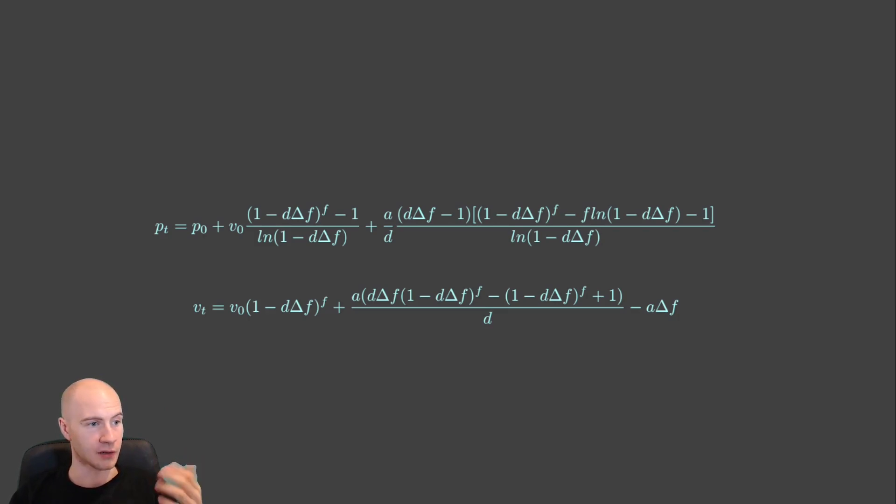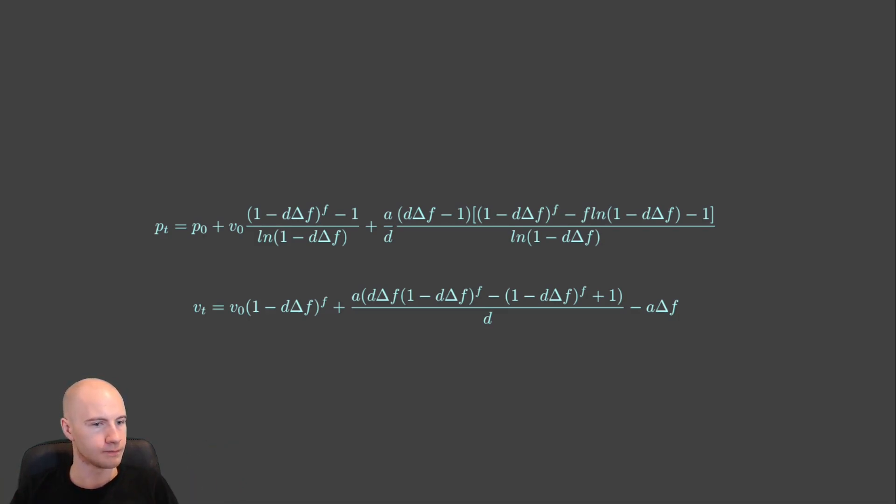And now we just take this formula, write it into code into some method and we've gotten rid of the while loop. That is all. This is the code. It really is just the same as the formula but in C sharp. The only difference is that I multiply by delta time again. And the reason is that the function is defined in frame time. So this means like a time of one is one frame and not one second. And so I multiply again so I get the time in seconds instead of the frames.